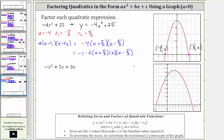Now to clear the fractions, we'll distribute two into each binomial. Writing it as a negative, distributing two gives us two times x, that's two x, plus two times five halves, which simplifies to five. Distributing two into the second binomial gives us two x, and then minus two times five halves, which simplifies to five. So the factored form of the given expression is negative times the quantity two x plus five times the quantity two x minus five.